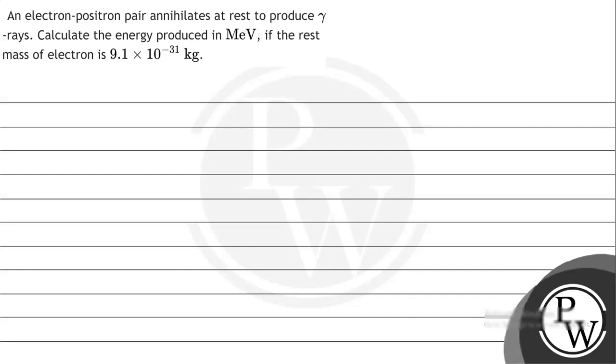Hello, let's read the given question. The question says an electron-positron pair annihilates at rest to produce gamma rays. Calculate the energy produced in mega electron volts if the rest mass of electron is 9.1 times 10 to the minus 31 kg.